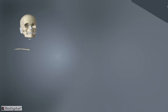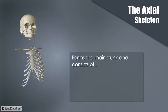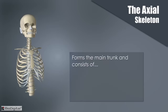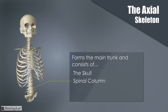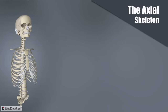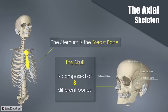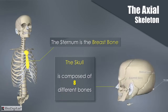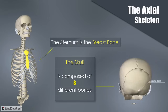The first section we'll cover is the axial skeleton. This forms the main trunk of the body and consists of the skull, spinal column, ribs, and sternum. The sternum is the breast bone, and the skull is composed of eight different bones.